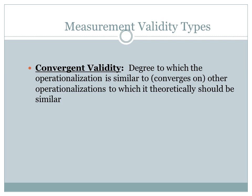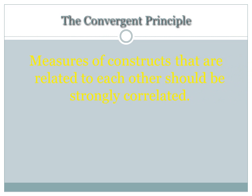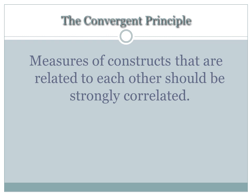Convergent validity is the degree to which operationalizations of constructs that are similar converge on each other. Convergence means that constructs that are related are strongly correlated. Correlation ranges from minus 1 to plus 1 — the closer you are to 1, the more perfect the relationship between the two items or constructs.